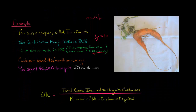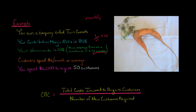So how do we calculate the customer acquisition cost? We're going to take the $6,000 that we spent to acquire customers and divide it by the number of customers we acquired, which is 50. That gives us $120 as the cost to acquire a customer.